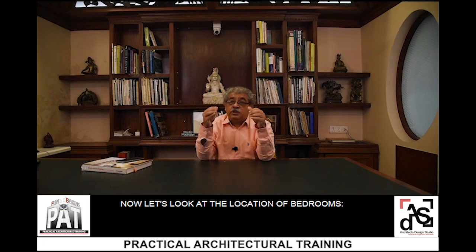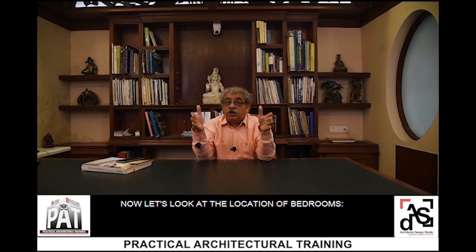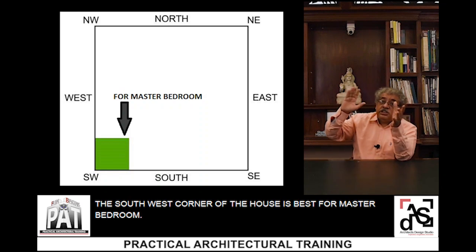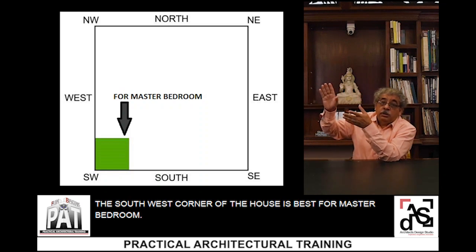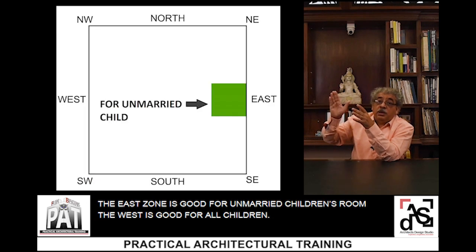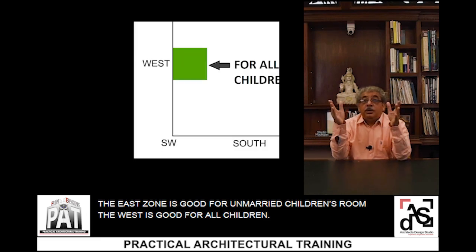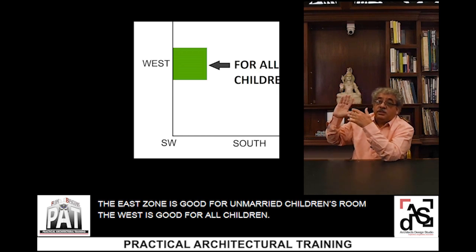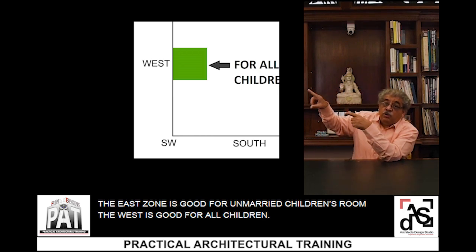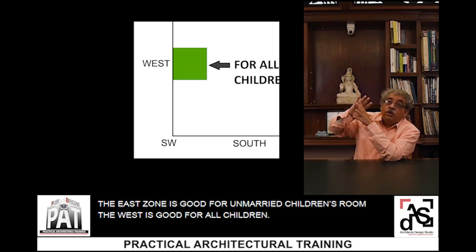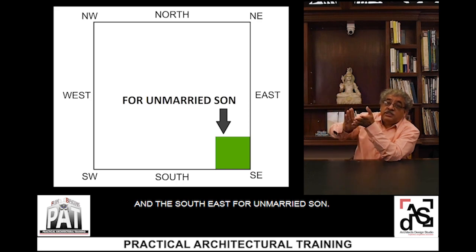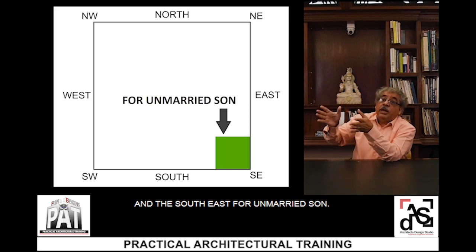Now let us look at the location of the bedrooms. The south-west corner is the best for the master bedroom. The east zone is good for the unmarried children's room. The west is good for all children. And the south-east is for the unmarried son.